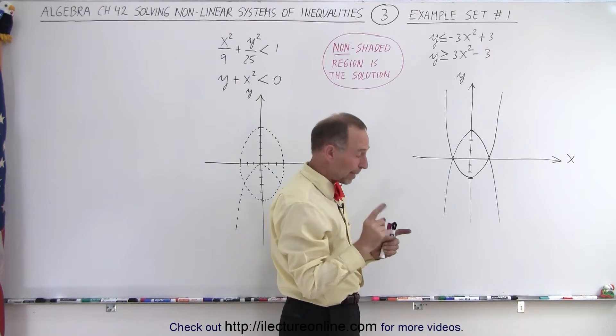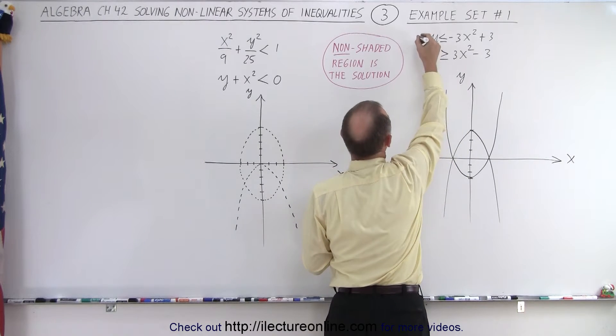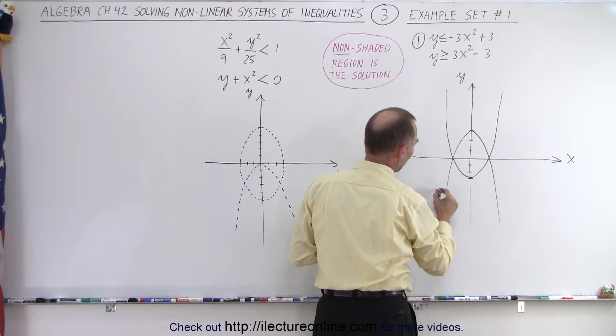So that we don't get confused, it's not a bad idea to label them or number them. So the top one here, let's call that equation number one. That means that this down here is equation number one.